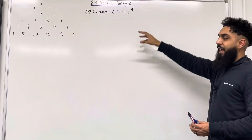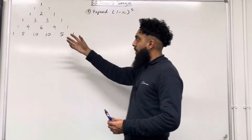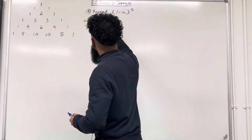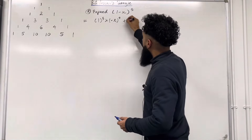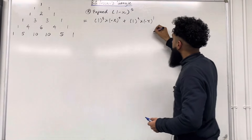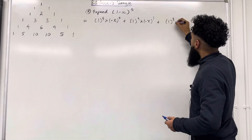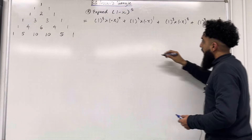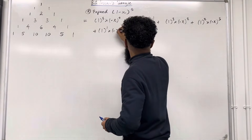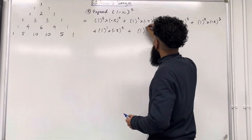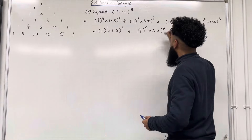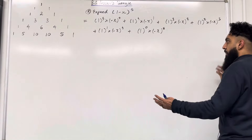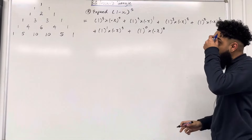Example 2: we're going to expand (1 − x) to the power of 5 using Pascal's Triangle. The first step is to list the terms in this expansion: 1⁵ × (−x)⁰, plus 1⁴ × (−x)¹, plus 1³ × (−x)², plus 1² × (−x)³, plus 1¹ × (−x)⁴, plus 1⁰ × (−x)⁵. We've decreased the power of 1 by 1 each time and increased the power of (−x) by 1 each time — that is the pattern.